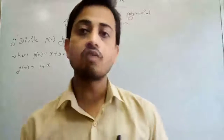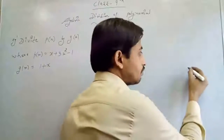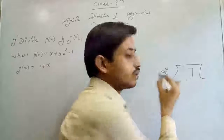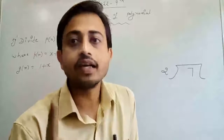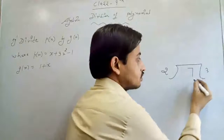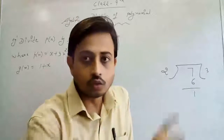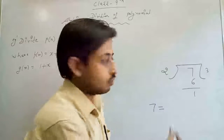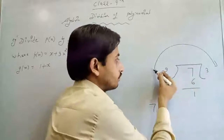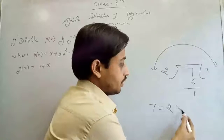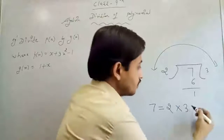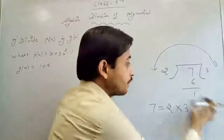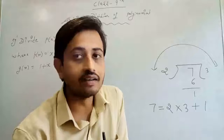Let us look at how we can divide a number, as you already know. If our number is 7 and I want to divide it by 2 — 2 threes are 6, so we get remainder 1. This can be written as: 7 equals 2 into 3 plus 1. That is 6 plus 1, which equals 7. This is the representation of how we can divide a number.